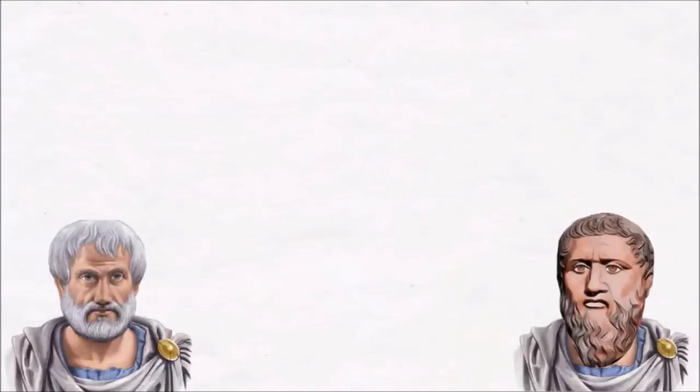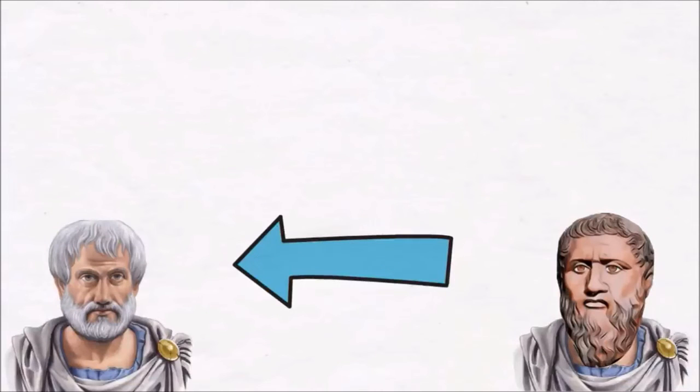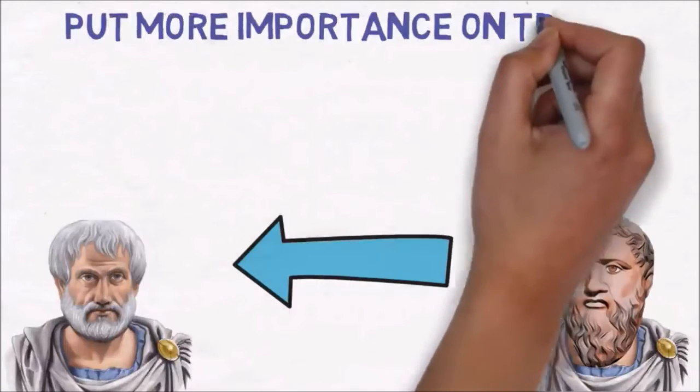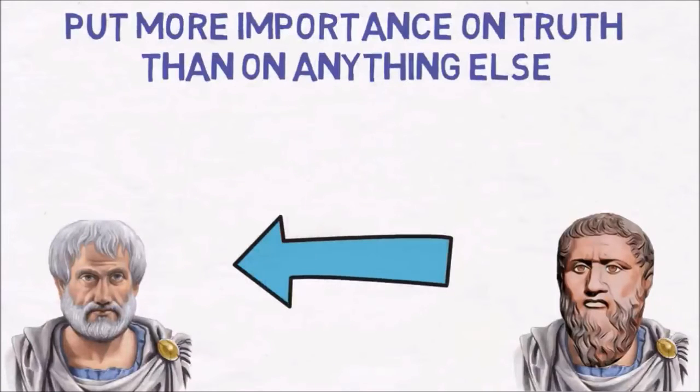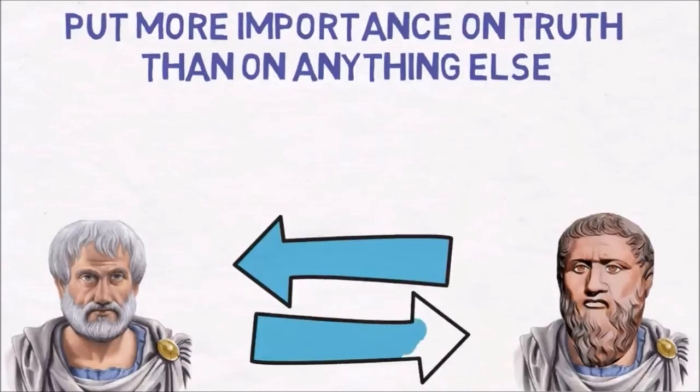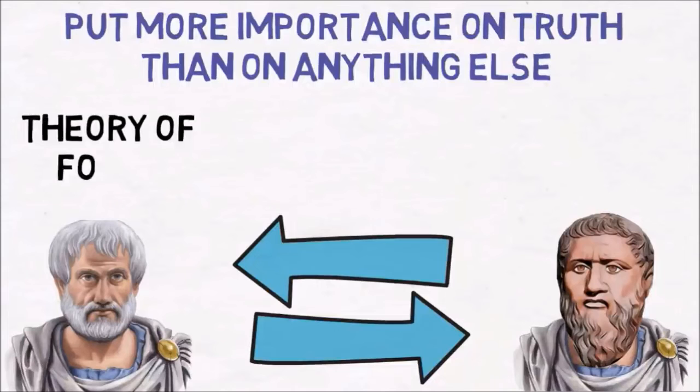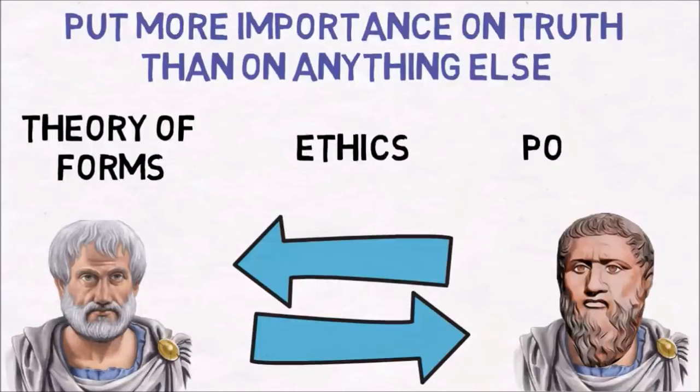Aristotle had a close friendship with Plato and Plato brought out the greatness in Aristotle. However, Aristotle didn't let this friendship blind him, and following Plato's steps, he put more importance on truth than on anything else. Although Aristotle had an enormous respect and admiration for Plato, his philosophy departed from him in three important aspects: regarding the theory of forms, regarding ethics, and regarding politics.